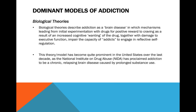That moves us to biological theories. Biological theories describe addiction as a brain disease in which mechanisms leading from initial experimentation with drugs for positive reward to craving — as a result of increased cognitive wanting of the drug, together with damage to executive function — impair the capacity of addicts to engage in reflective self-regulation. This model has become quite prominent in the United States over the last decade as the National Institute on Drug Abuse has proclaimed addiction to be a chronic relapsing brain disease caused by prolonged substance use. A large number of clinical and laboratory observations have focused on the hypothesis that the primary neural substrates of persistent compulsive drug use are long-term associative memory processes occurring in several neural circuits that receive input from midbrain dopamine neurons.